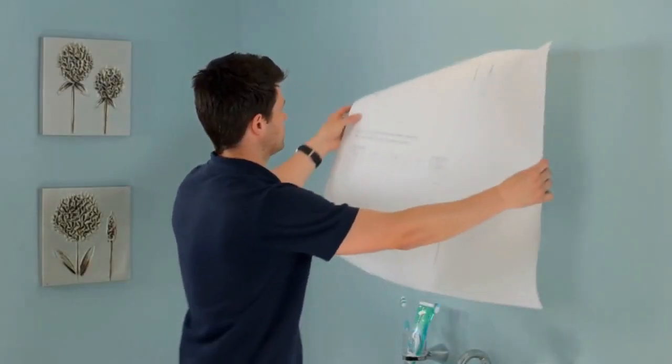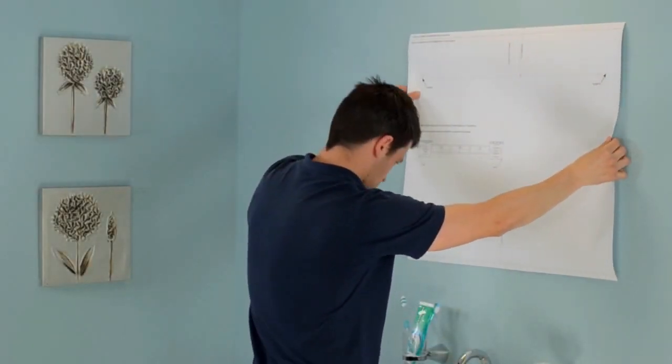Assemble the bracket provided using the paper template supplied, decide on the cabinet position, and mark the wall.